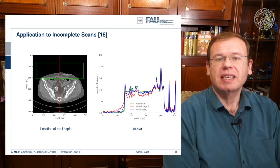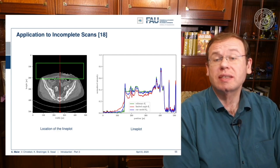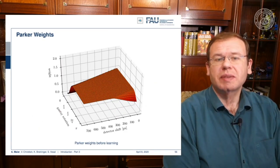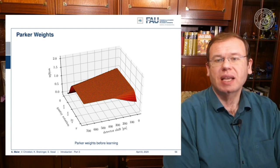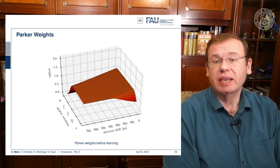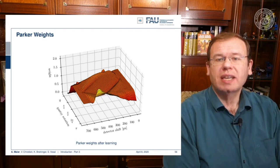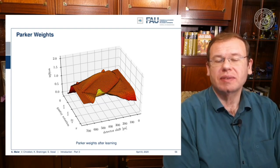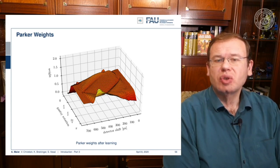The fun part is that our algorithm has been inspired by a traditional CT reconstruction one, so all of the layers actually have interpretations — they are linked to a specific function. What you typically do for such a short scan is weigh down rays that have been measured twice, such that the opposing rays exactly sum up to one. You can see the Parker weights in the figure. When we train our algorithm, the main changes are in the Parker weights. The network learns to increase the weight of particular rays running through the area with the angular limitation, using information from slightly different directions in those rays that have not been measured.